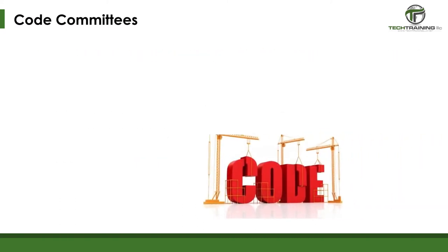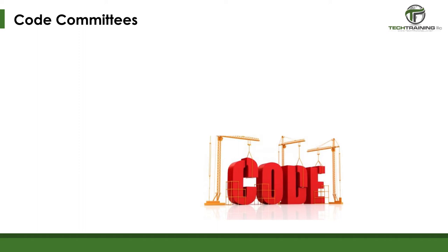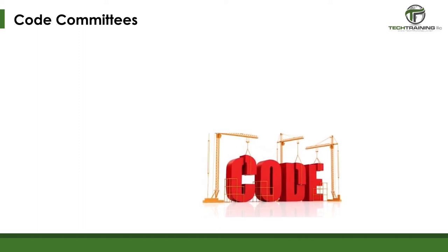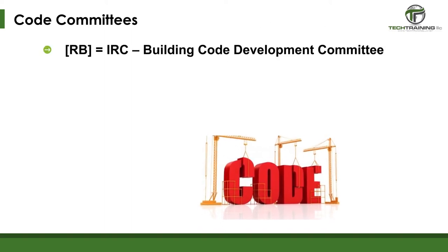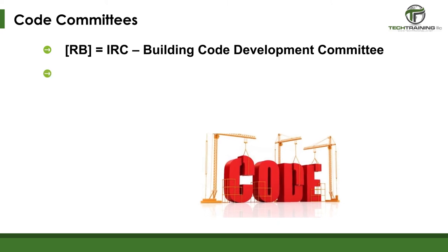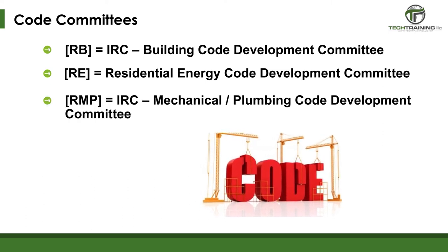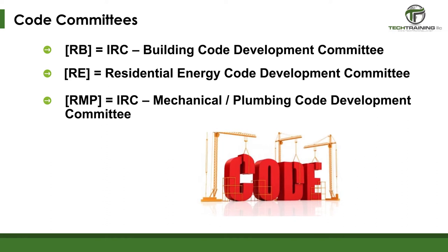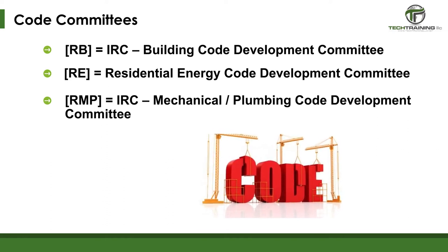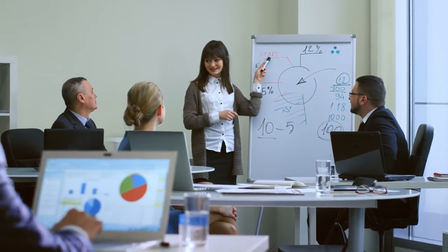Let's take a moment to discuss the actual code committees. Code committees will listen to and consider proposed changes to the code at various committee action hearings, also called CAH. These committees are as follows: RB is the code for the IRC Building Code Development Committee. RE is the code for the Residential Energy Code Development Committee. And RMP is the code for the IRC Mechanical Plumbing Code Development Committee. The Residential Energy Committee is also responsible for the residential provisions of the IECC, or International Energy Conservation Code. Dates are established as part of the code review process where interested parties may submit their code change recommendations and proposals.